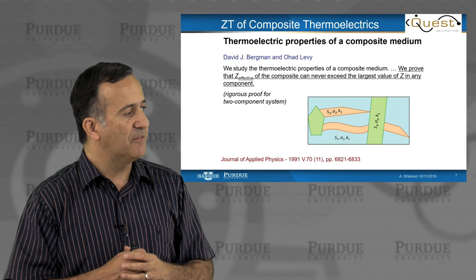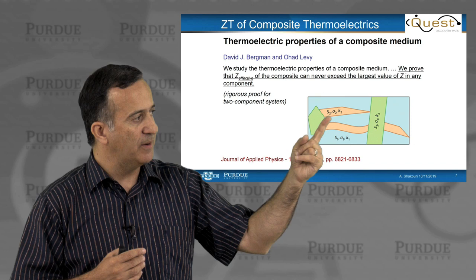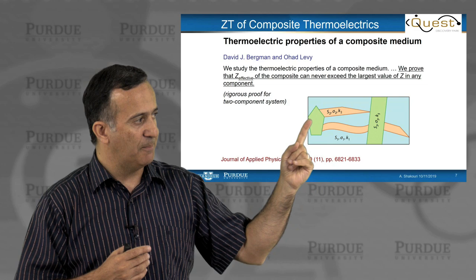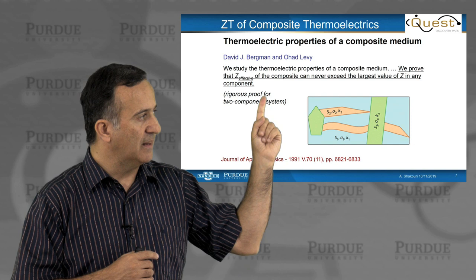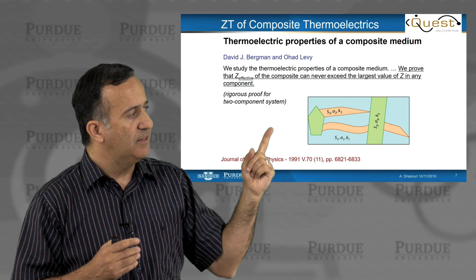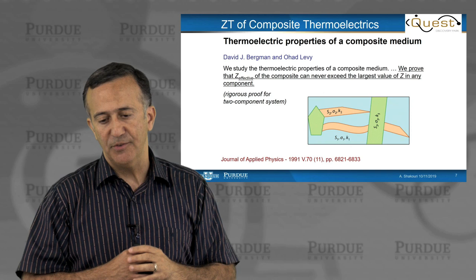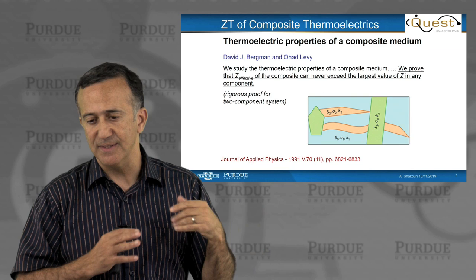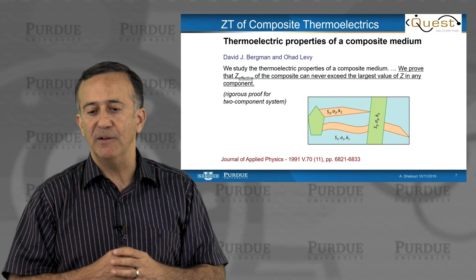We discussed about ZT of a uniform medium. In early work of thermoelectrics, people said, can we do things better if we use inhomogeneous medium? We can have regions with a given Seebeck coefficient, electrical conductivity, thermal conductivity. And here, of course, is a very arbitrary geometry. Just to tell you, nothing is out of the question. There is a very interesting paper came out in 91, Bergman and Levy, who said that the Z effective of a composite can never exceed the largest value of the Z in any component. So basically, this work, which they showed rigorous proof for two-component system, and they kind of speculated for multi-component system, is powerful because it says by playing with the geometry and compositions, you don't want to improve Z effective.